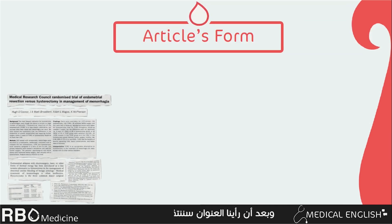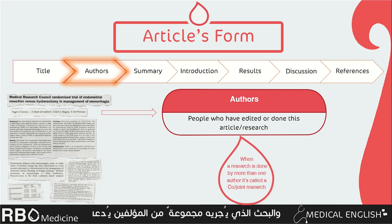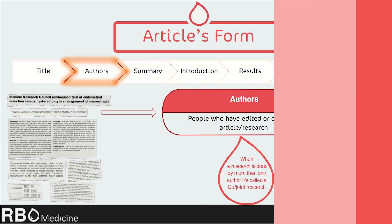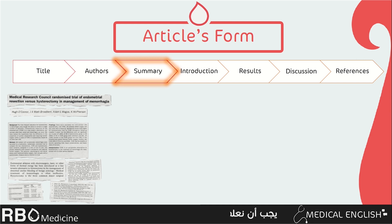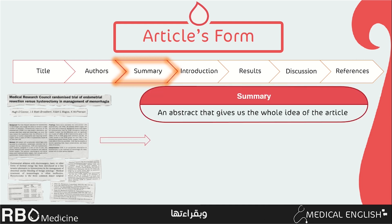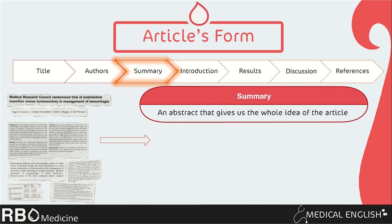After the title, we move on to the second component: the authors, who are the people that have edited or done this article or research — we'll just see a group of names. A research done by many authors is called a collaborative or joint research. The next heading is very important: the summary. It's a smaller version of the research, so by reading it, an idea about why the research was done, how it was done, and what it came up with should be completely formed. Many people prefer to read the summary instead of the whole article to save time. In our article, the summary has four subheadings: background, methods, findings, and interpretation.